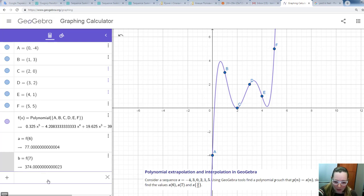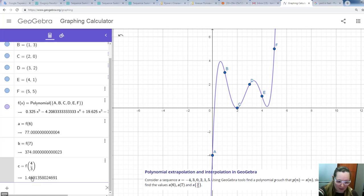And finally, we will interpolate to find F of 4 over 3. The value is here.